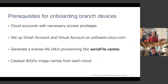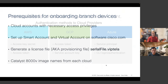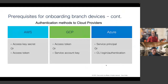You also need to identify the Catalyst 8000V image names from each cloud provider. For authentication: AWS uses access key or access token — we use the access key secret method in this demo. Google Cloud uses an access token or service account key JSON file — we use the service account key. Azure supports service principal or CLI authentication — we use the CLI method.